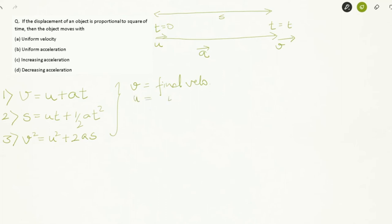So I'm writing U equals initial velocity, S is the displacement, and A is acceleration. These three equations hold for uniform acceleration.